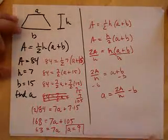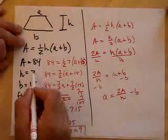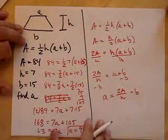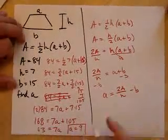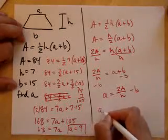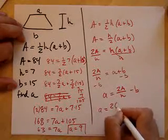Now that I have this formula, look how nice. I can just take these numbers, bing, bang, boom, and shove them in this formula and a comes out. Let's try it out. Ready? a equals 2 times the area, 84,